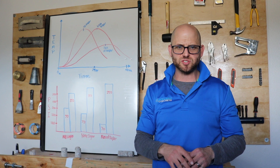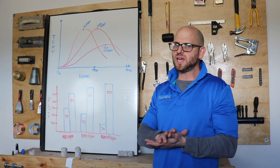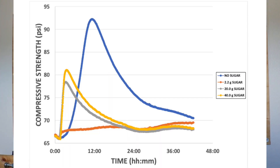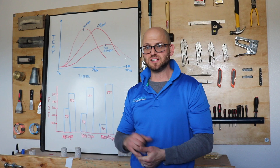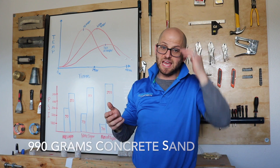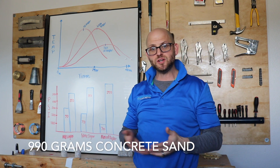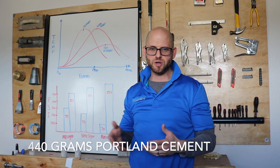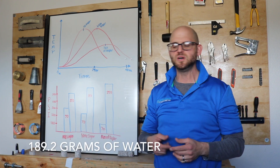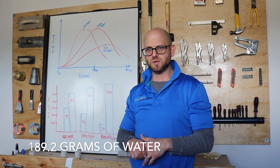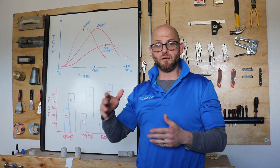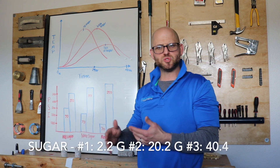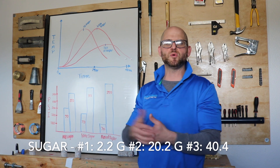We've got a bunch of samples stored, and right now we only have 48-hour strength. Here are the actual results. We did four mixes. Our basic mix is from ASTM C1260: 990 grams of cement, 404 grams of sand, 440 grams of ordinary Portland cement, Type I/II, with a 0.47 water-cementitious ratio. Then we put in increasing amounts of sugar — first no sugar, then 2.2 grams, then 20 grams, then 40 grams.